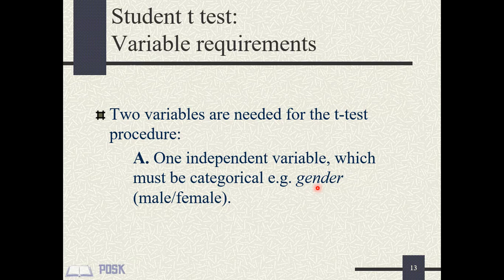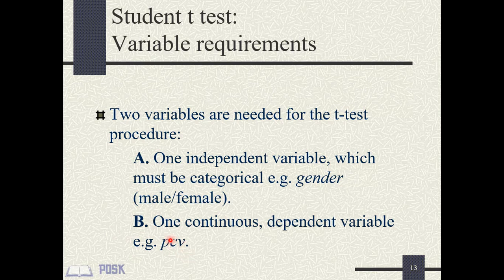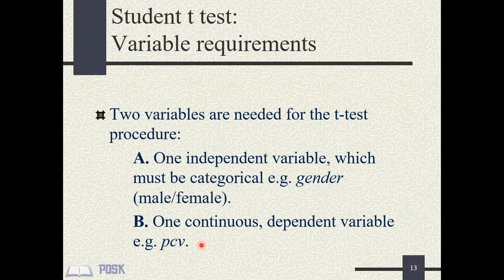The dependent variable is also known as the outcome or predicted variable. PCV is the dependent variable here — it is a continuous variable that is also normally distributed. To do a T-test in SPSS, click on Analyze in the menu bar, then select Compare Means, and then click on Independent Samples T-Test.